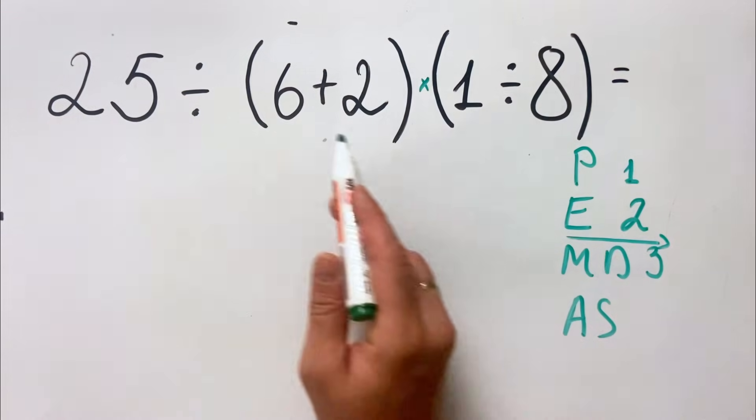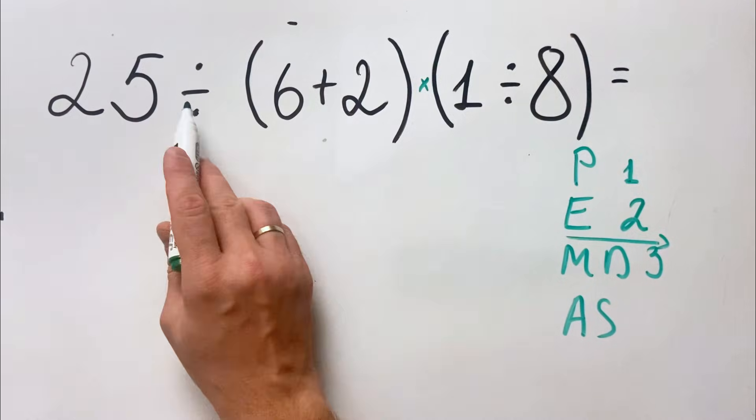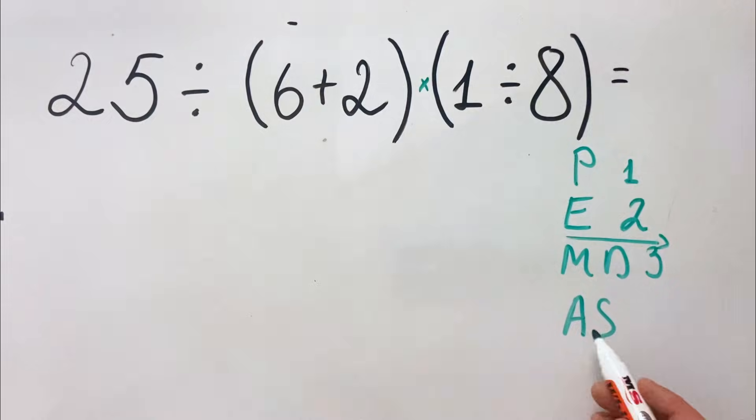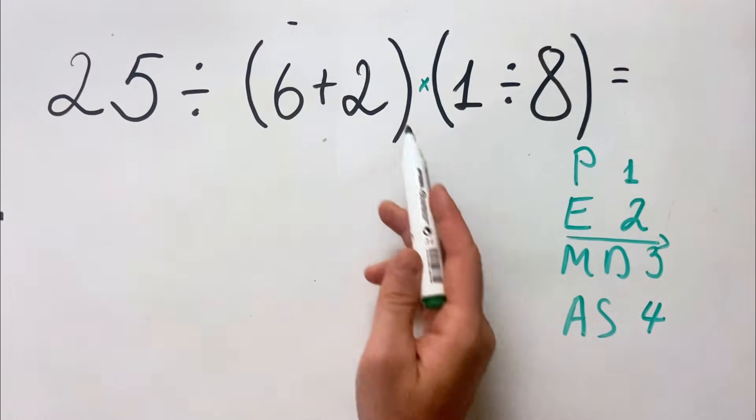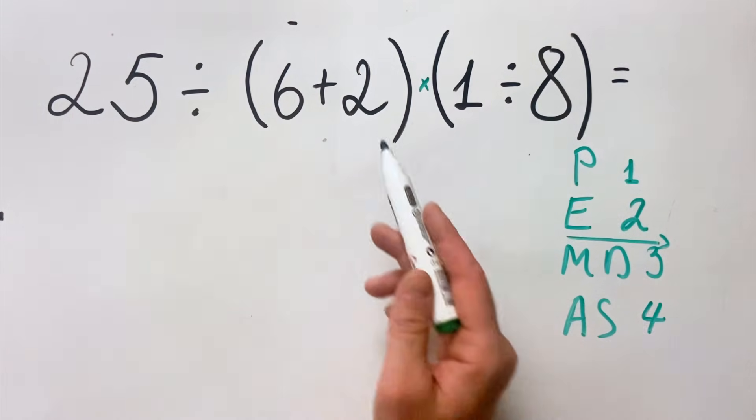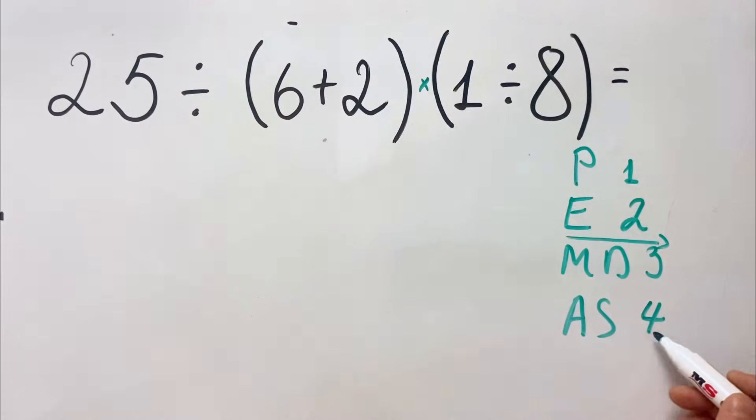They must be done from left to right, so in this case left to right we have division, we have multiplication. And at the end we have addition and subtraction. Here outside parentheses we don't have it, but if we had, we would have done it in the fourth place.